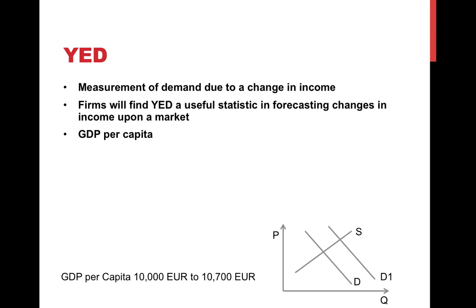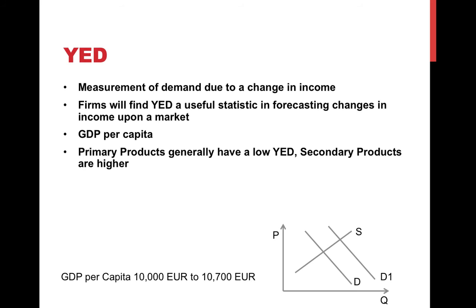GDP per capita just means average income per person. One additional point worth mentioning is that primary products generally have a very low YED. Commodities and raw materials like rice and wheat — if income rises, people tend not to buy a lot more of these goods because they're already cheap and already being purchased regularly. So it won't change the market for these goods too dramatically.